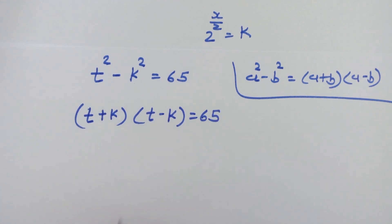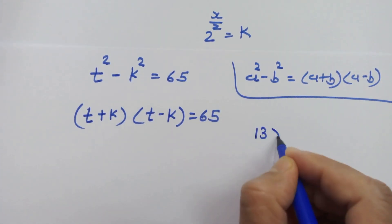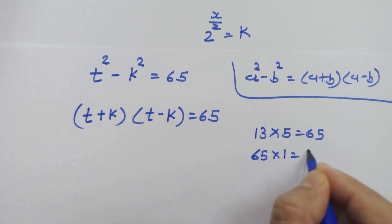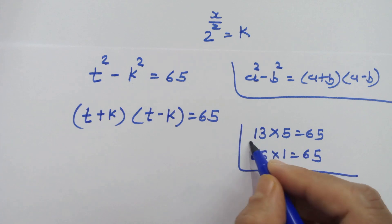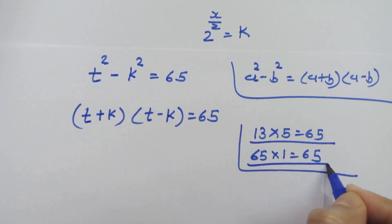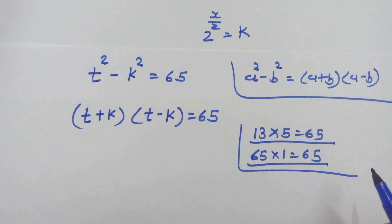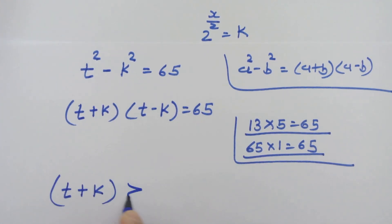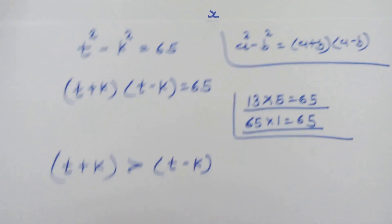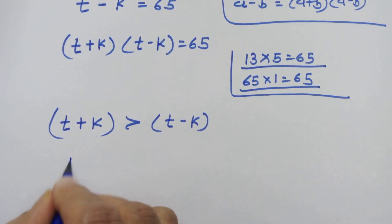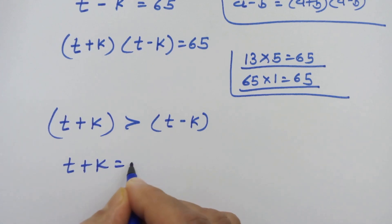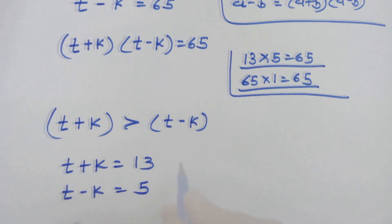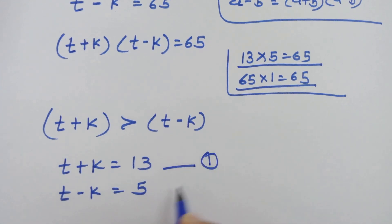In this manner, we can write t plus k into t minus k is equal to 65. Now 13 into 5 is equal to 65, and 65 into 1 is equal to 65. Let's go ahead using the factor 13 and 5, and we will check the other case later. We can see t plus k is greater than t minus k, so we compare: t plus k equals 13 and t minus k equals 5 — equation 1 and equation 2.